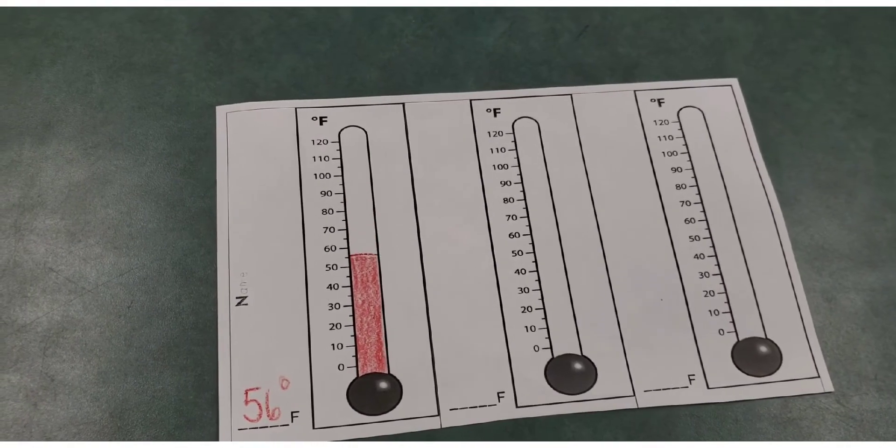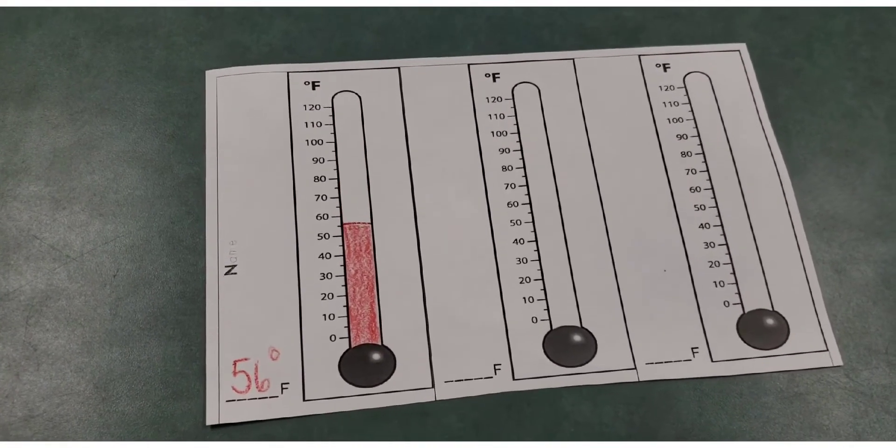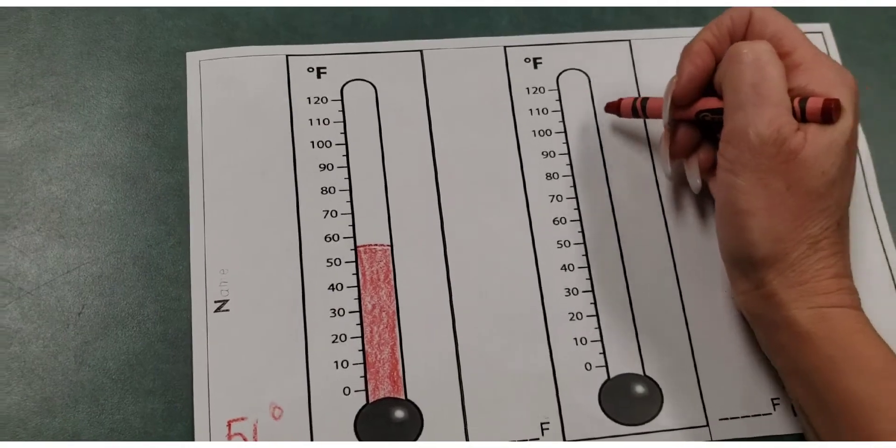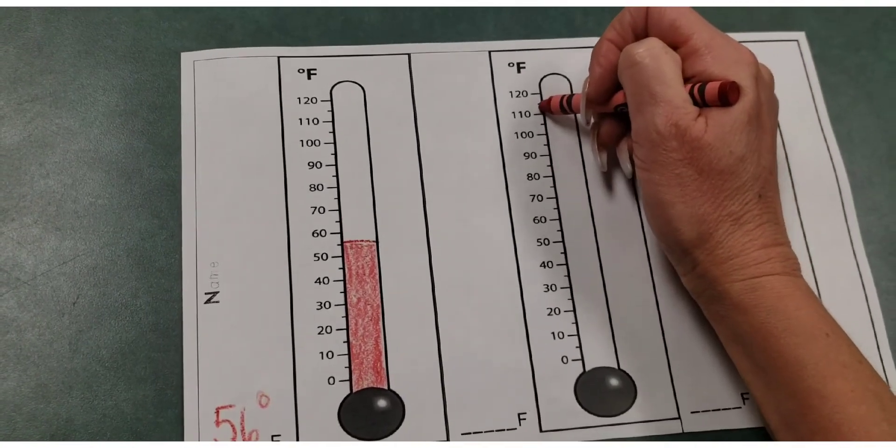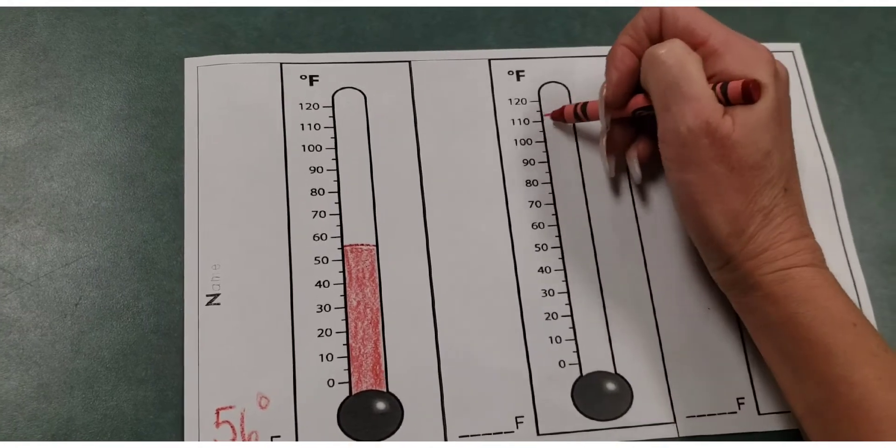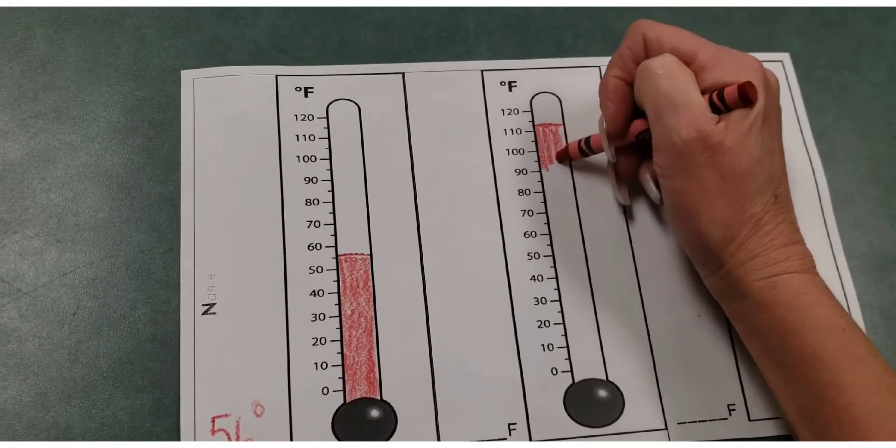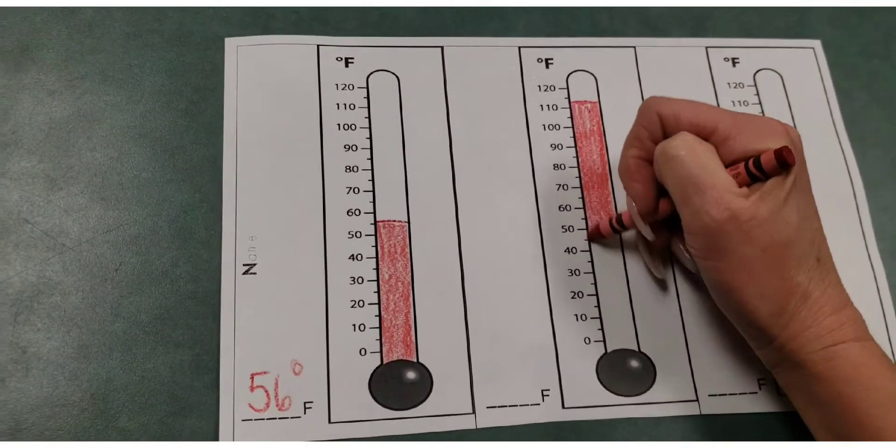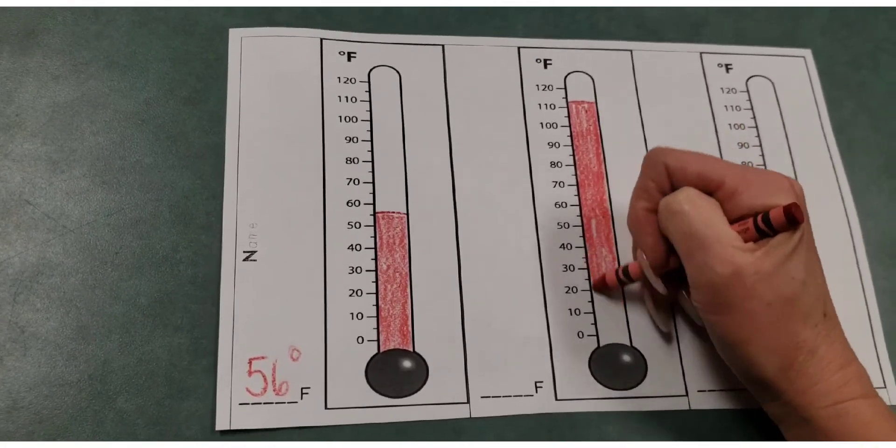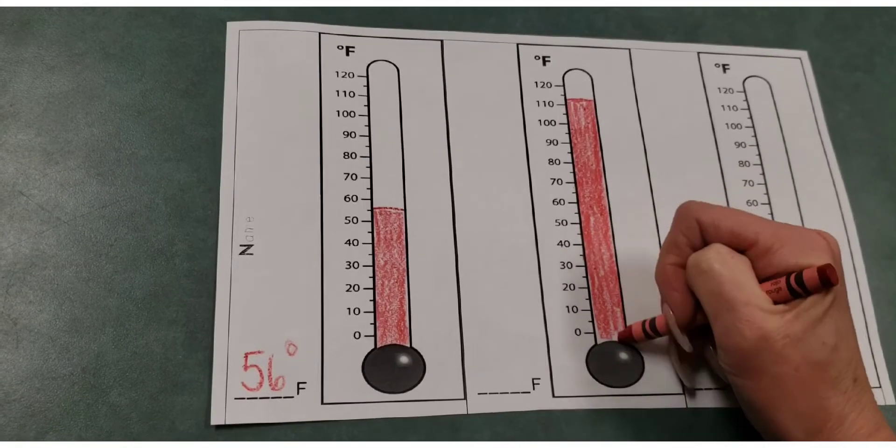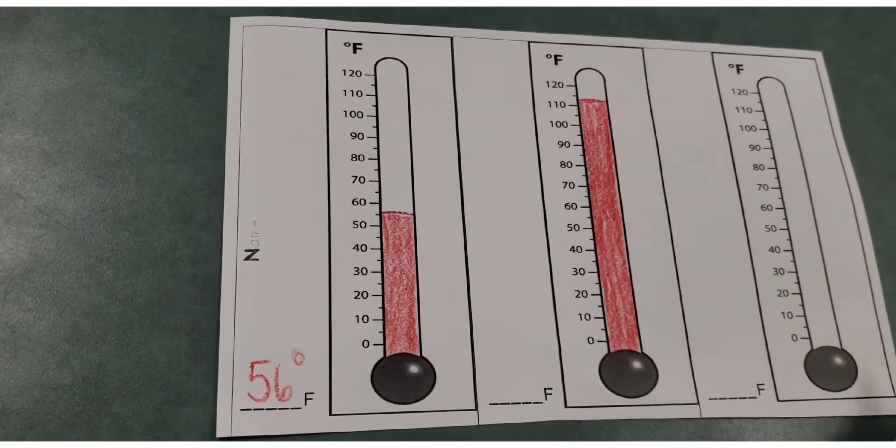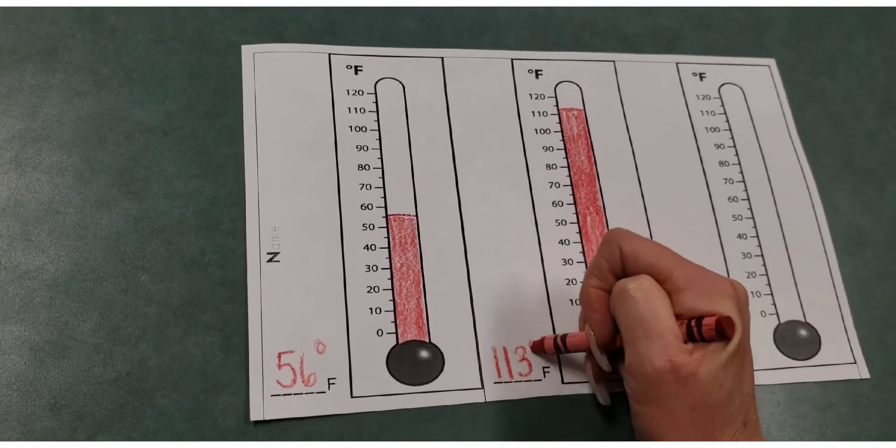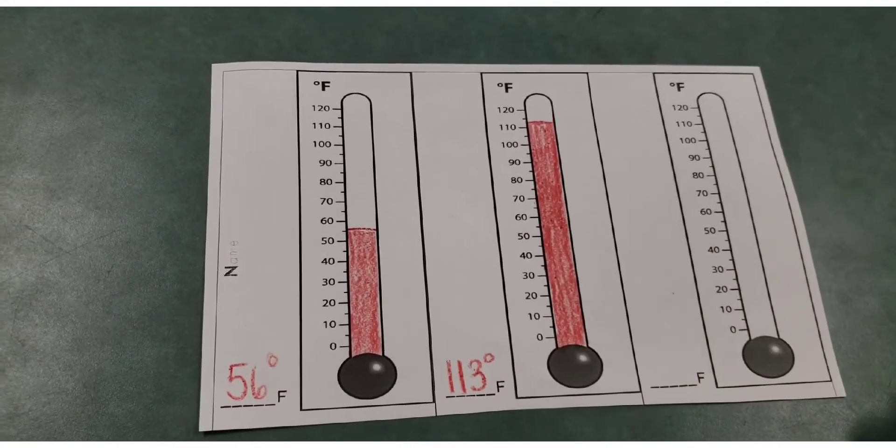We just did the thermometer in the hot water, so we're going to go ahead and record the temperature. It is 113 degrees. I'd have the kids mark 113, draw a line, and then they would color in their thermometer on their paper. And then I would have them also write 113 degrees Fahrenheit. And there you go.